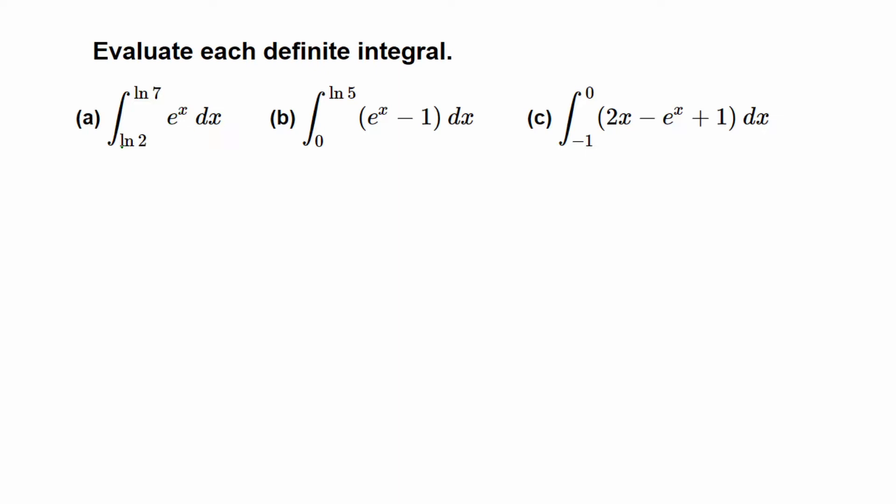of e^x with limits from ln2 to ln7. So the anti-derivative of e^x is just e^x, and this dx is gone. Now we need to evaluate from ln2 to ln7.